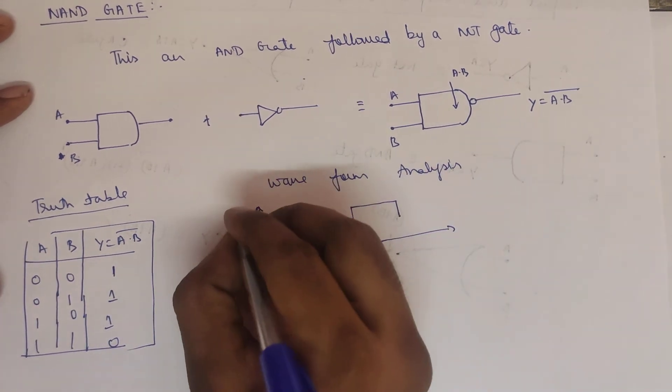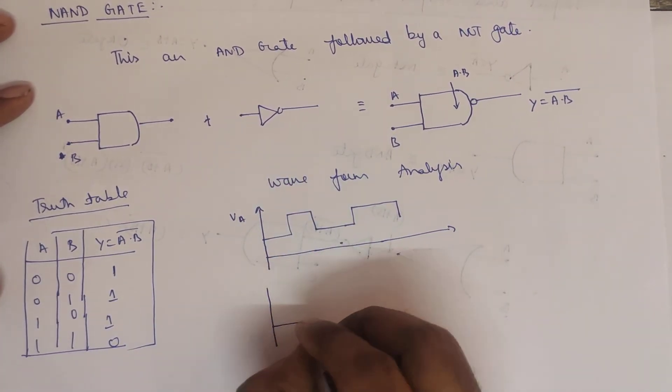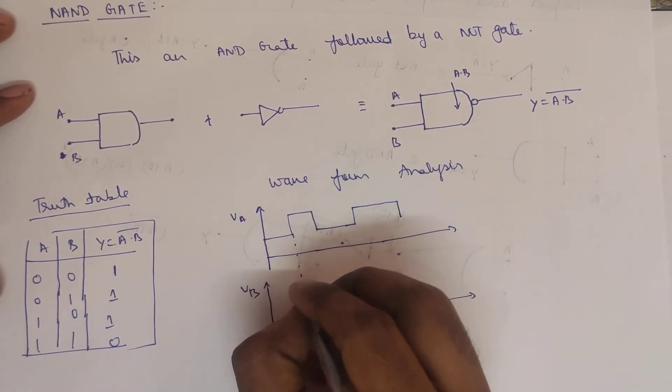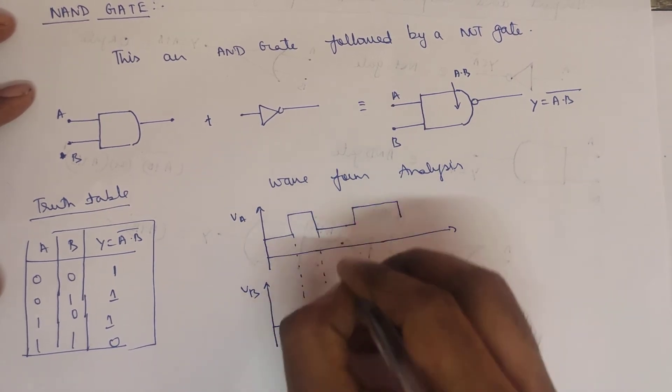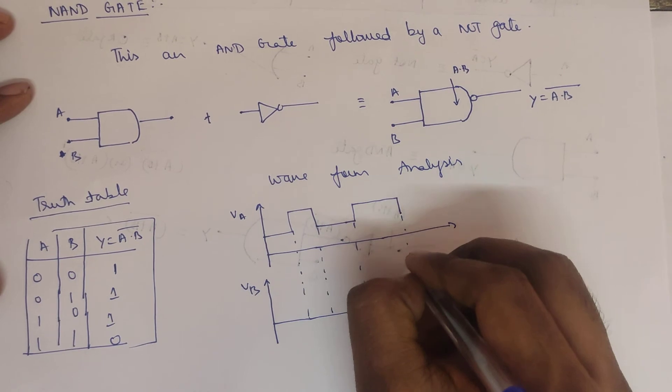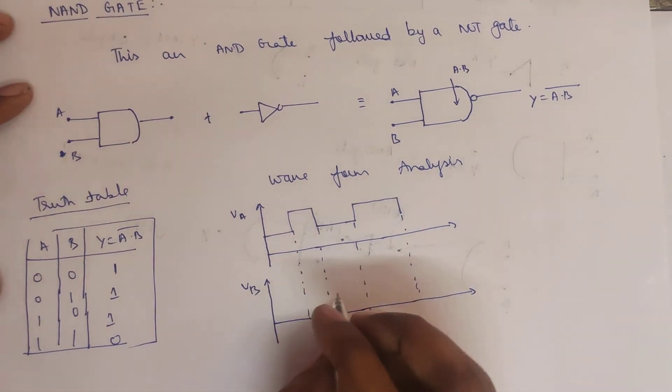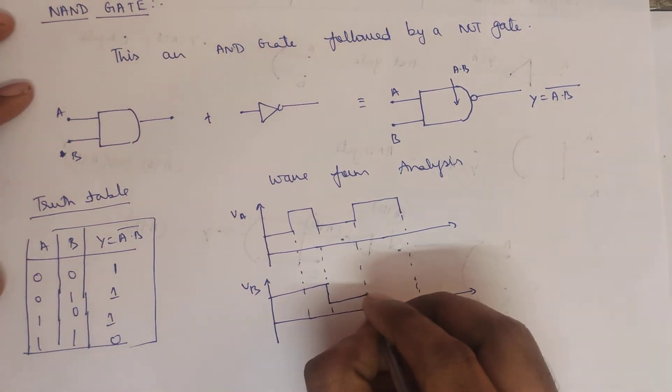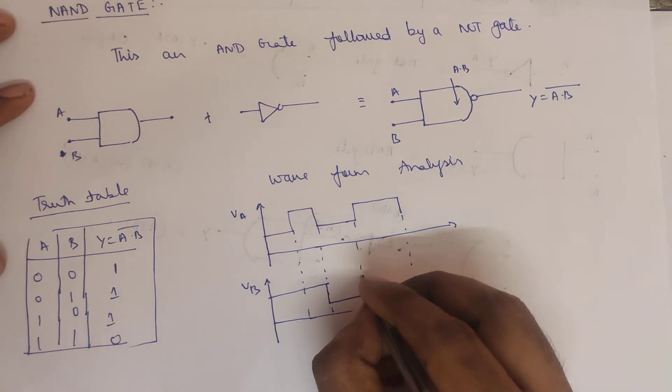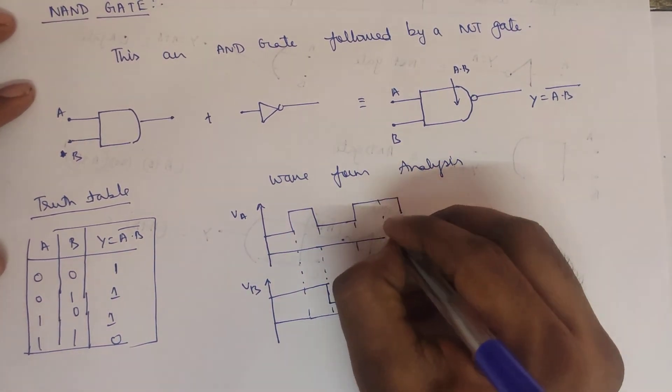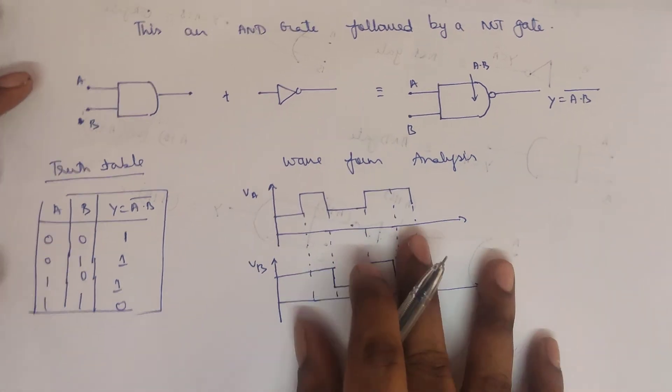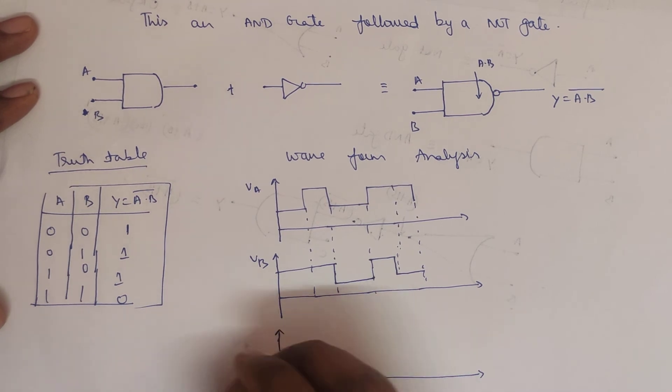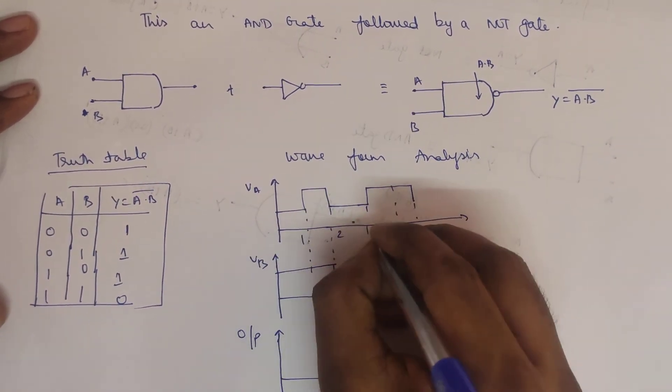So we have voltage A input, voltage B input. These are the points which are mentioned. So if A would be like this, then like this, then like this. And B would be like this, and like this, and like this.